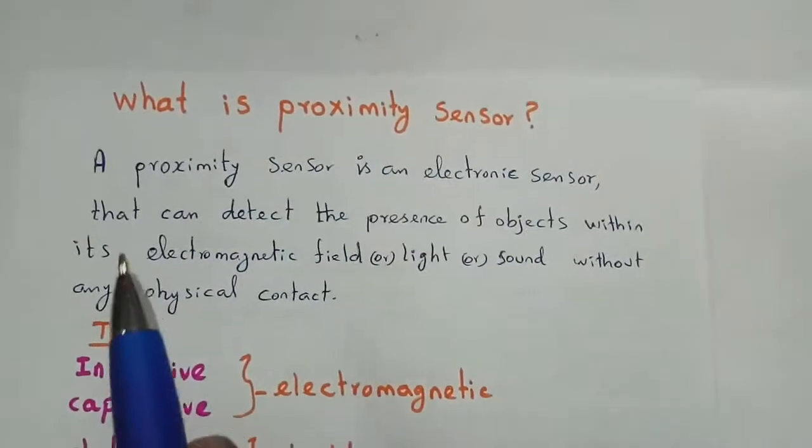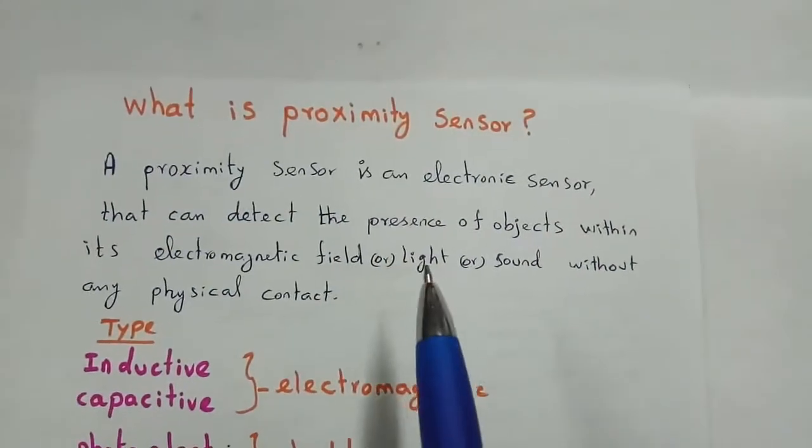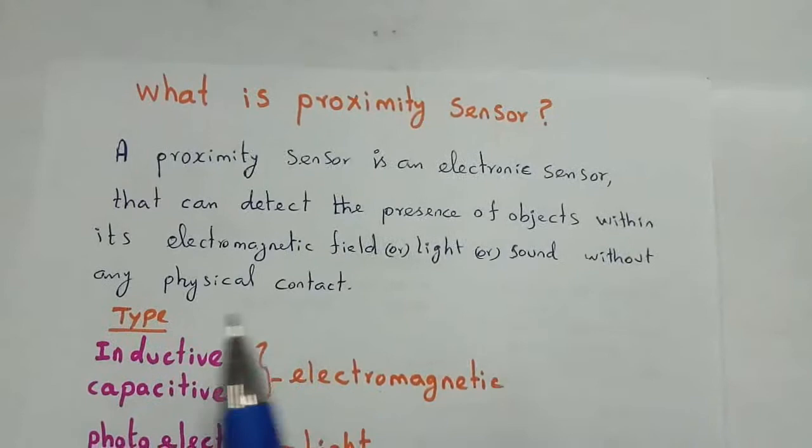Proximity Sensor is an electronic sensor that can detect the presence of objects within its electromagnetic field or light or sound without any physical contact.